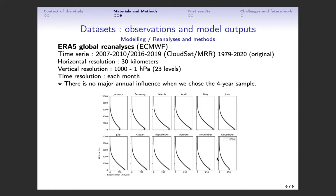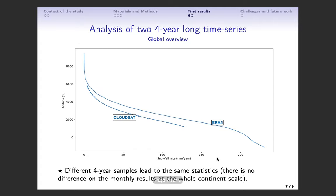A recent study shows that the four-year long time series of ERA5 that we chose does not impact much the annual average results. Here I show annual snowfall rate profiles averaged over the continent between 2007 and 2010. There is a good agreement between observed and modeled snowfall quantities, especially in the higher levels. This result does not change significantly across seasons.